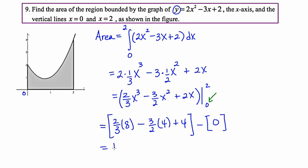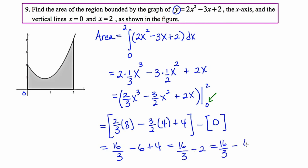So I'm left with 16 thirds minus 6 plus 4, which simplifies to 16 thirds minus 2, and further to 16 thirds minus 6 thirds. That gives us 10 thirds. So the area under y equals 2x squared minus 3x plus 2, bounded by x equals 0 and x equals 2, is 10 thirds.